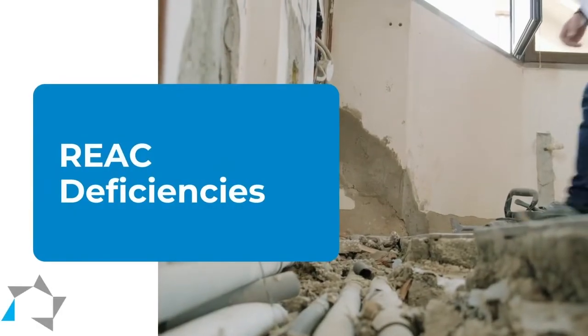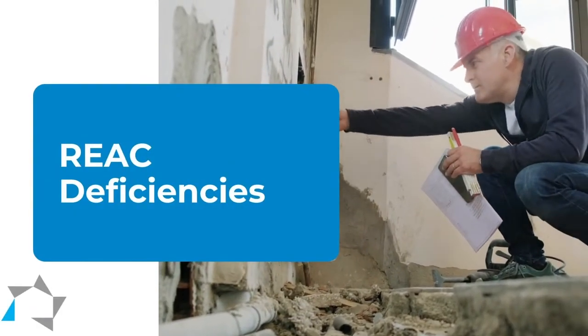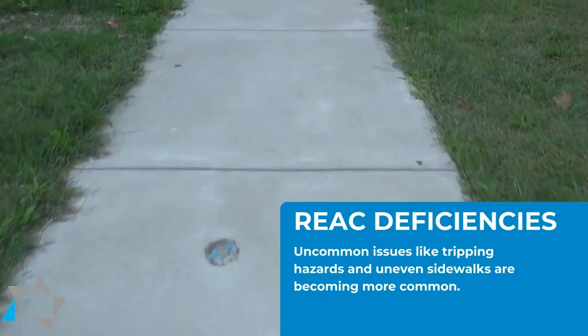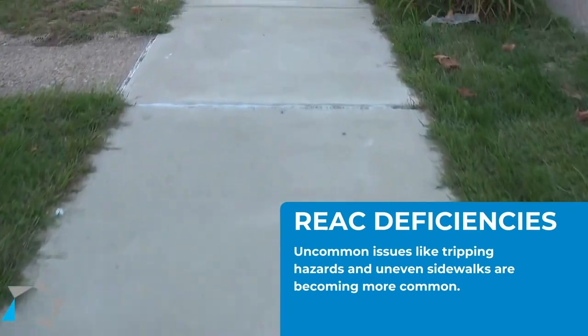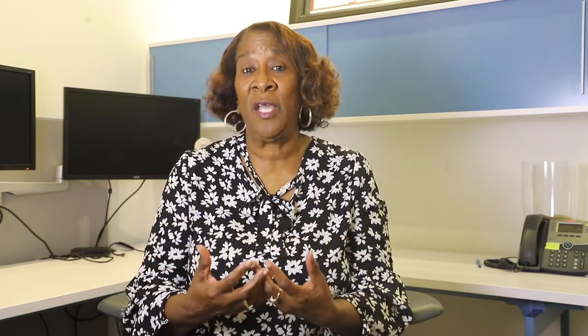Let's talk about the uncommon deficiencies with REAC. That would be your sidewalks not being even, being a tripping hazard. That would be your kitchen and bathroom faucets dripping, or a stopper not being there at all. That would also be moisture buildup on your property in the windowsills or sometimes even in the coat closets, depending on what type of air ventilation you have.